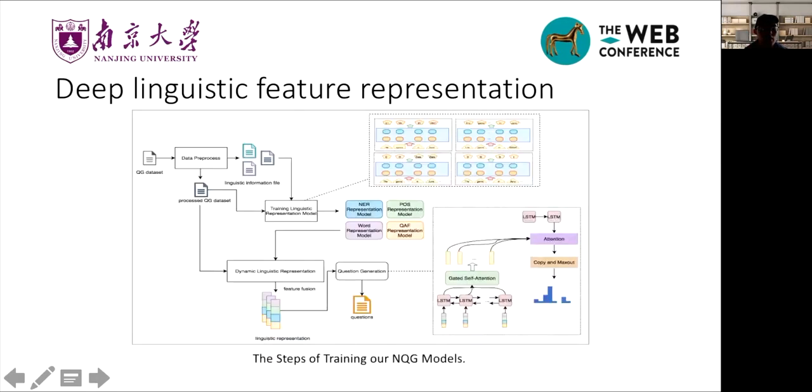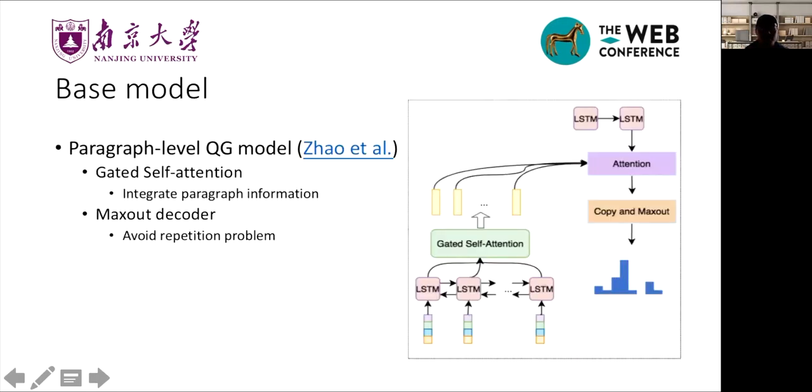This is the overall structure of our method. In the experiments, we utilize the paragraph-level QG model proposed by Zhao et al. as our base model. This model contains two important components: a gated self-attention and a maxout decoder.